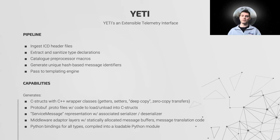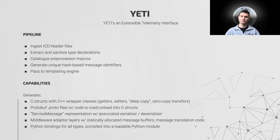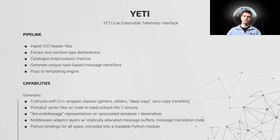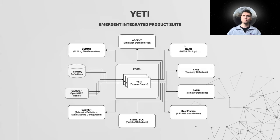Where it generates a number of things: C structs with C++ wrapper classes that contain getters, setters, deep copy and zero copy message transfer functions, protobuf definitions with corresponding load and unload functions, service message class wrappers with associated serializer and de-serializer capabilities, middleware adapter layers with statically allocated message buffers and translation layers, and lastly Python bindings for all message types that are compiled into a loadable Python module.